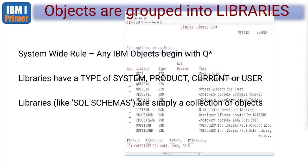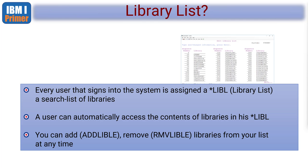Libraries, just like SQL schemas, are simply a collection of objects - but they can be a mixture of programs, files, data areas, and more. Every user that signs in is assigned a library list, and they can access the contents of libraries in their list. You can add and remove libraries. When reading a file you say 'read from my library list' and it searches sequentially through all those libraries, using the first match it finds.